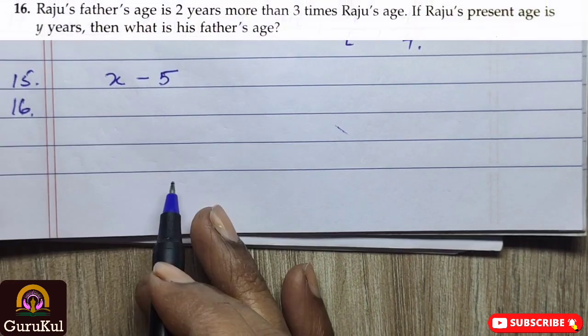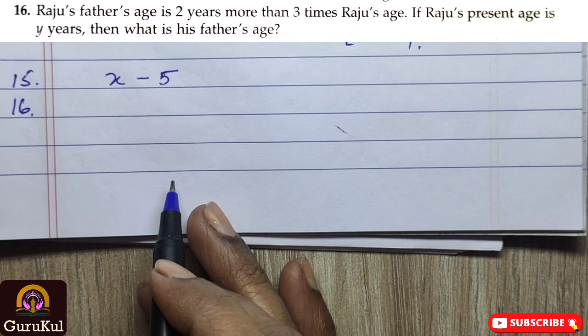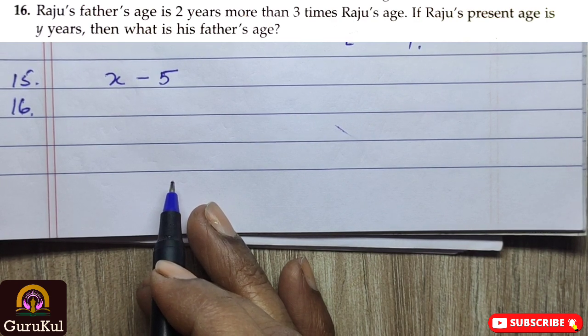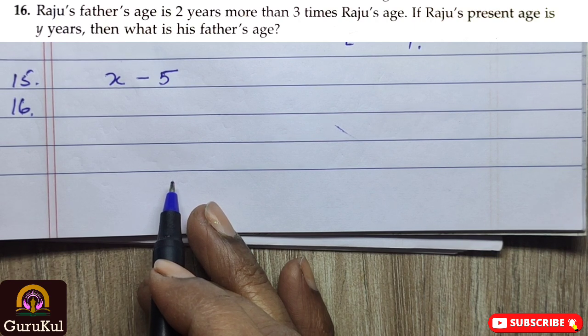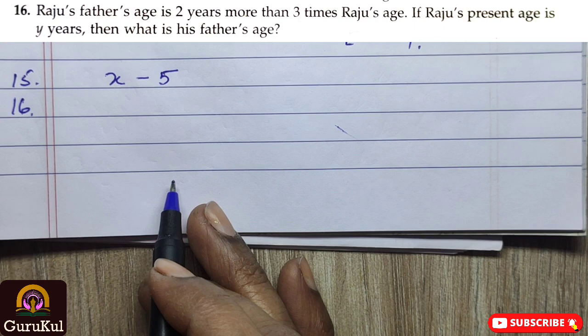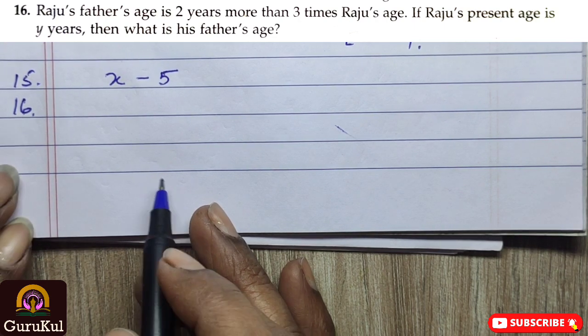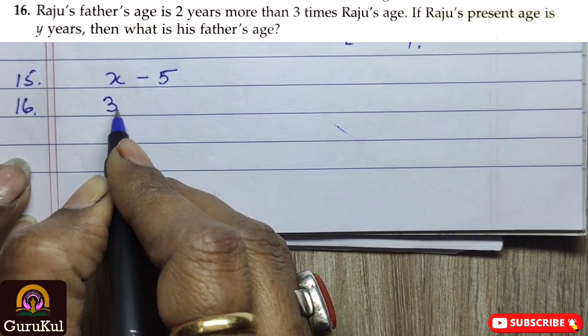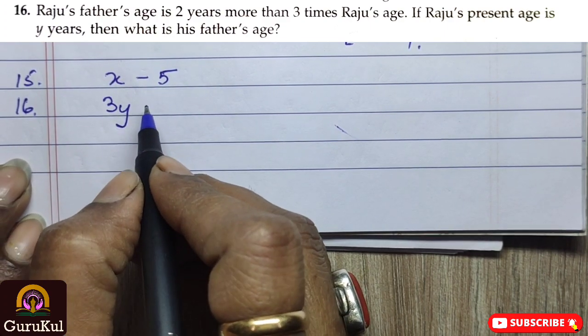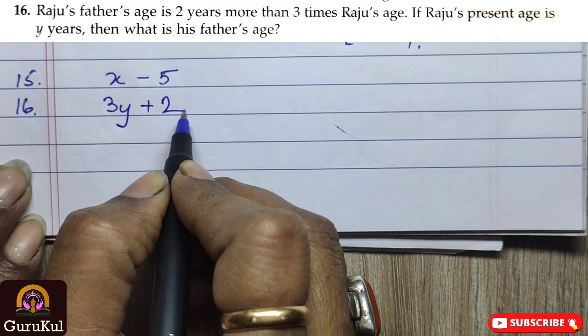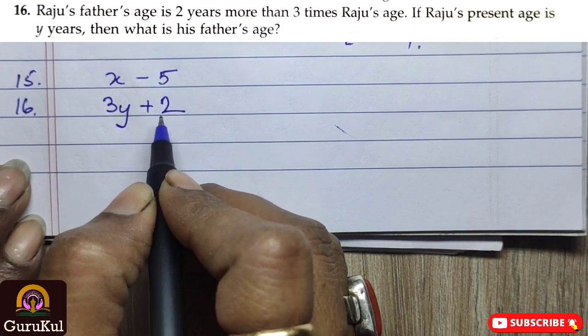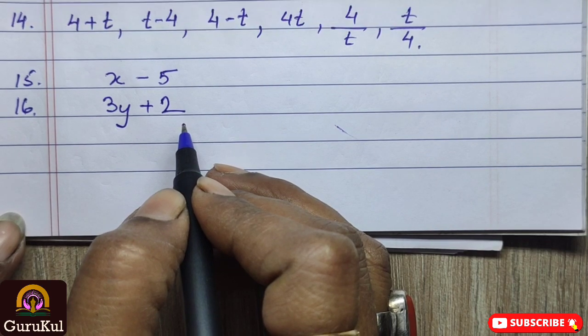Number 16. It says, Raju's father's age is 2 years more than 3 times Raju's age. If Raju's present age is y years, then what is his father's age? So, here, let me repeat. Raju's father's age is 2 years more than 3 times Raju's age. So, 3 times Raju's age means 3y and again it is 2 years more that means plus 2. So, 3y plus 2 is Raju's father's age.